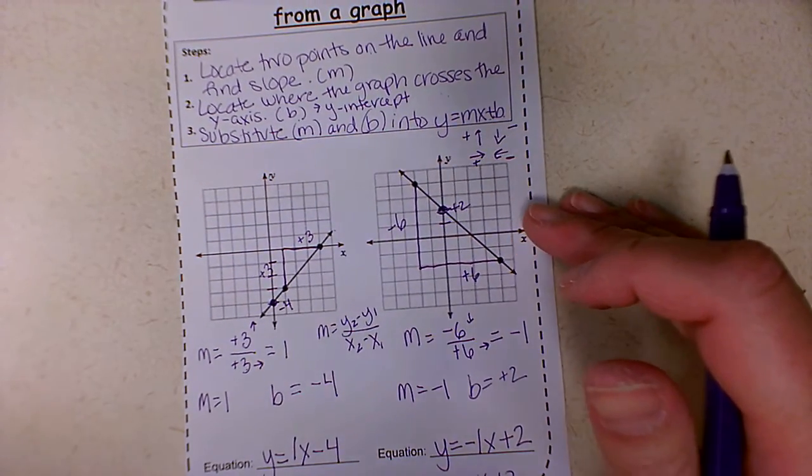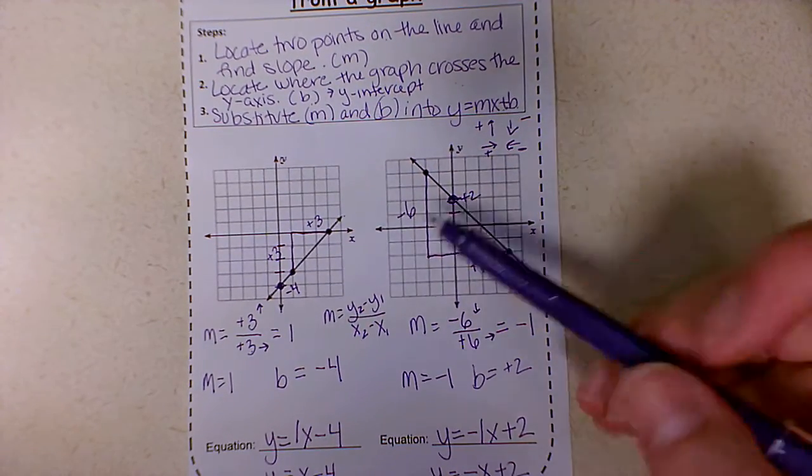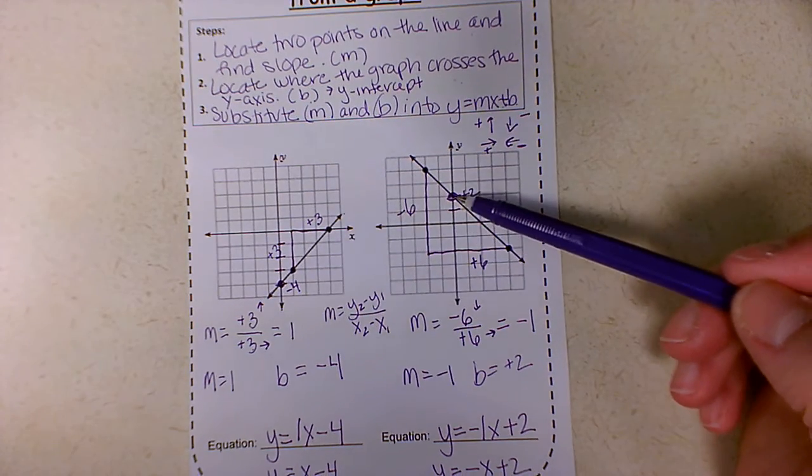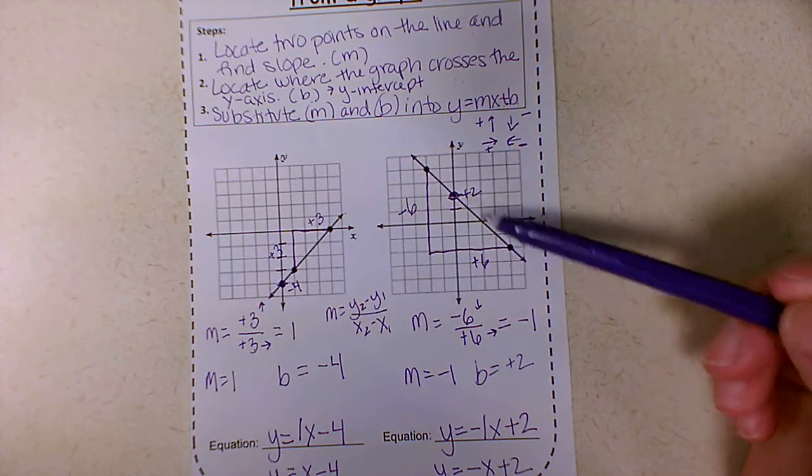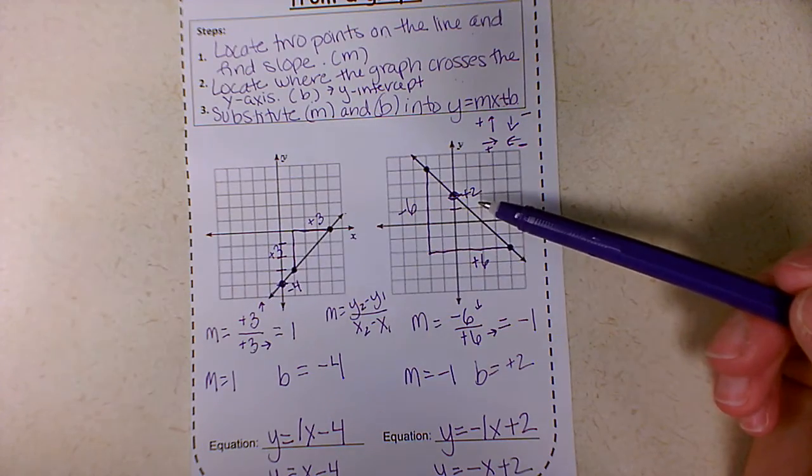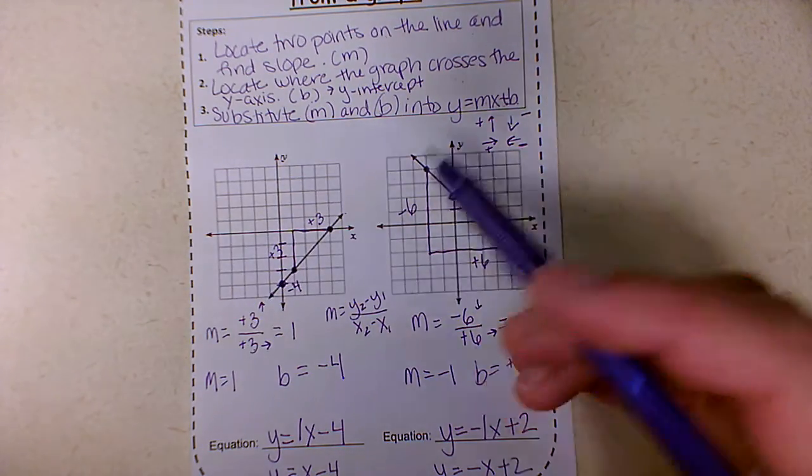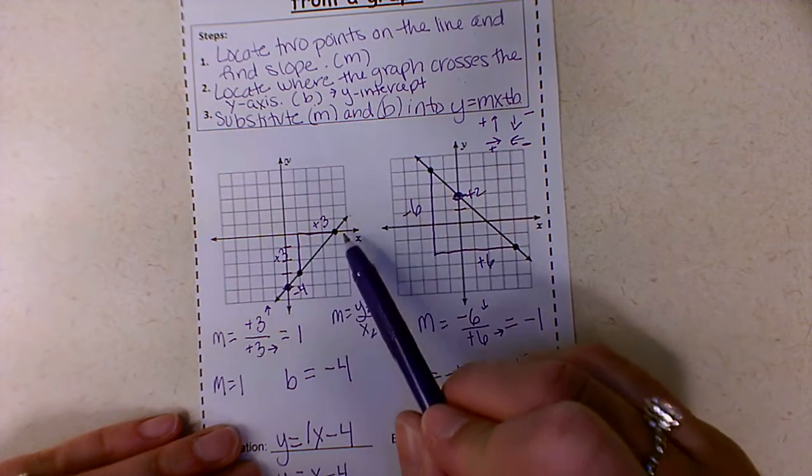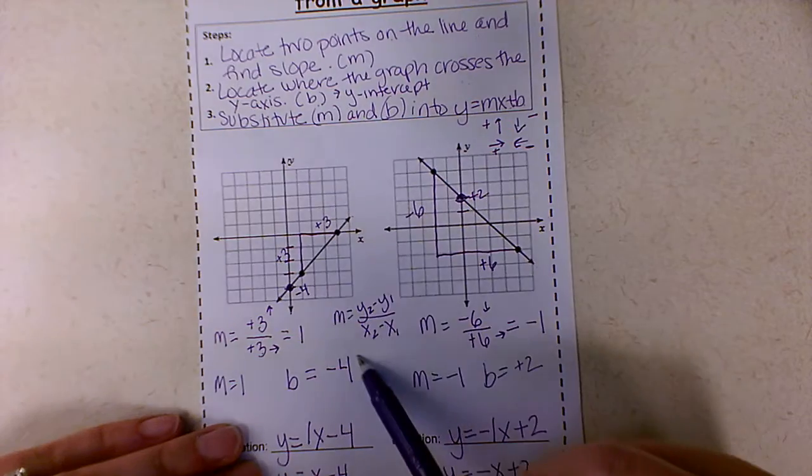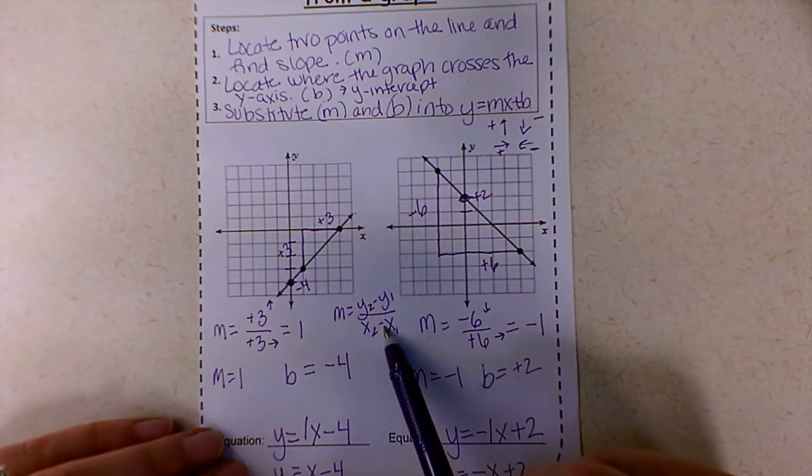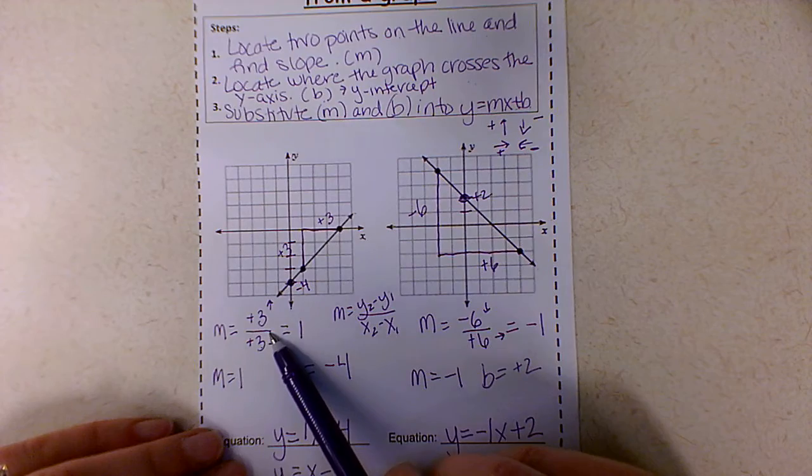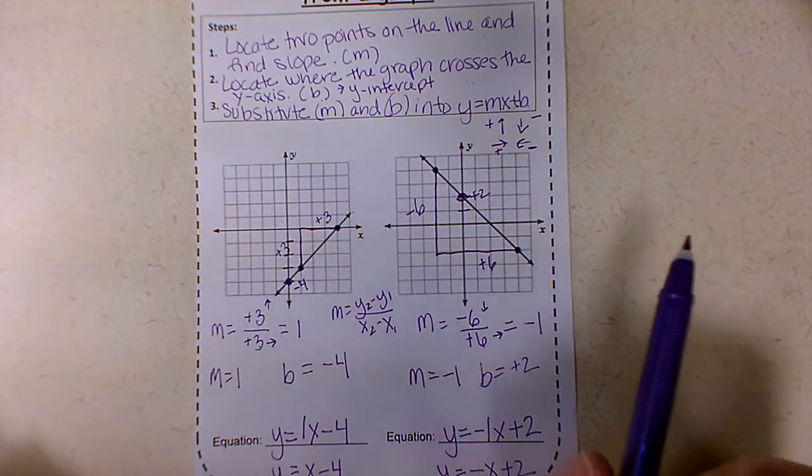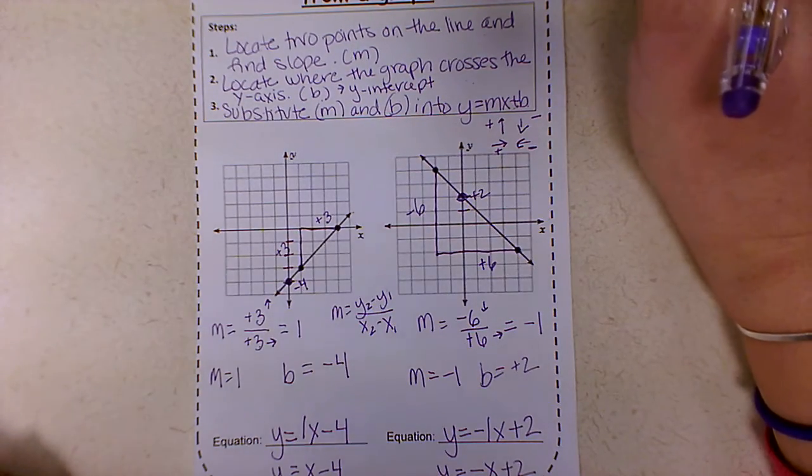This has been writing equation of a line from a graph. We located two points. We counted the boxes to find slope. We counted where the line crossed the y axis, and then we substituted into M and B. There are other ways of doing this, such as using the slope formula. We would need to actually find where these points lie. You are going to be using the slope formula to write an equation, but not yet. So I'd rather have you count the boxes and then we will explore slope formula in another video. I hope this helped. This has been writing equation of a line from a graph.